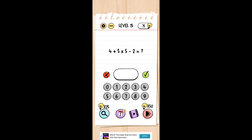5 into 5, 25, plus 4, 29, minus 2, 27, and that is our answer.